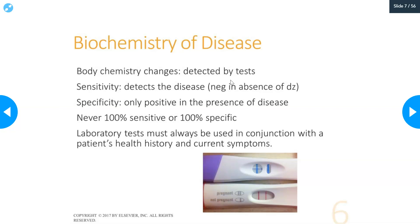Laboratory tests must always be used in conjunction with the patient's health history and current symptoms, because you could have a false positive or a false negative. Sometimes mistakes can be made — a specimen gets mislabeled or the wrong patient gets tested. So it's really important to always interpret results in the context of what's going on with a patient.